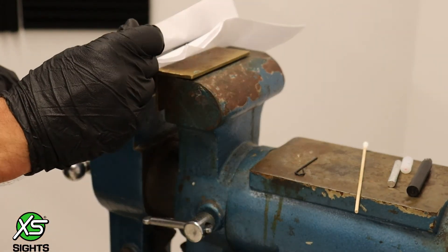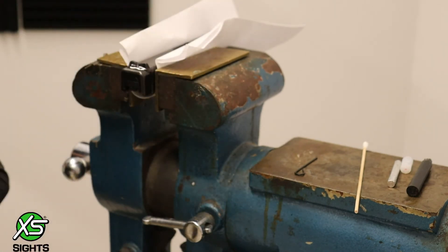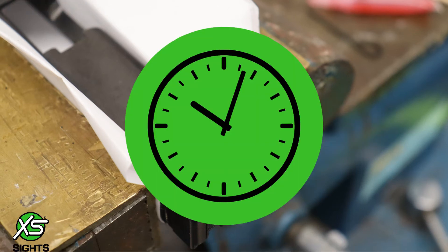Apply Red Thread Locker to the joints around the sight and slide. Let this set for at least 15 minutes to cure.